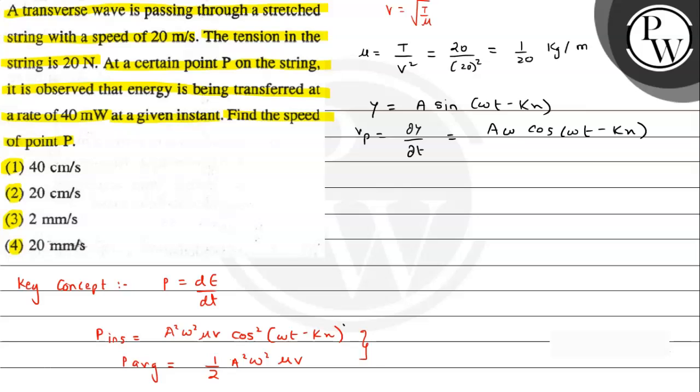This can be written as A omega cosine of omega t minus kx. From this expression and the instantaneous power expression, we can say